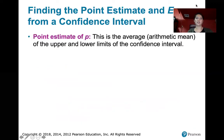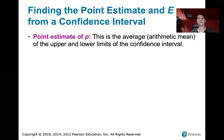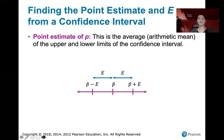A point estimate of p is the average, or the arithmetic mean, of the upper and lower limits of a confidence interval. So if we're given that confidence interval, we know that p-hat is directly in between the upper limit and the lower limit. The easiest way to see this is to graph it — the interval extends from p-hat minus the error to p-hat plus the error, and p-hat is directly in the center.